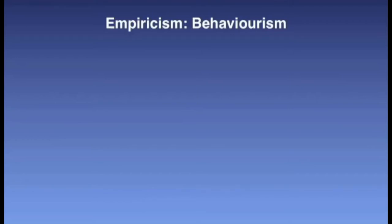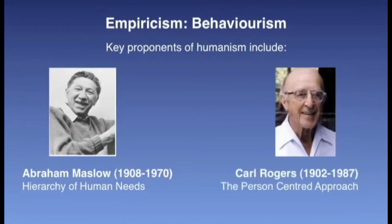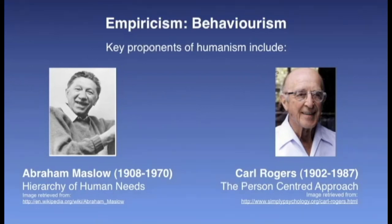Humanists also believe that it is necessary to study the person as a whole, especially as an individual grows and develops over the lifespan. It follows that the study of the self, motivation, and goals are areas of particular interest. Key proponents of humanism include Abraham Maslow and Carl Rogers. A primary purpose of humanism could be described as the development of self-actualized, autonomous people. In humanism, learning is student-centered and personalized, and the educator's role is that of a facilitator. Affective and cognitive needs are key, and the goal is to develop self-actualized people in a cooperative, supportive environment.